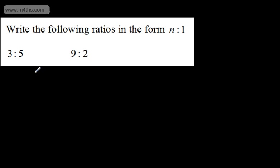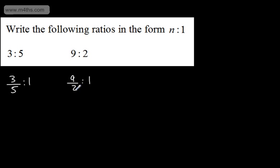We're asked to write the following ratios in the form n to 1 — this time we're going the other way, so I want my 1 on the right. I'm going to divide both by 5, giving 3 over 5 to 1, so n is 3 fifths. The next one would be 9 over 2 to 1, and n would be 9 over 2. So that's writing ratios in the form n to 1 and 1 to n.